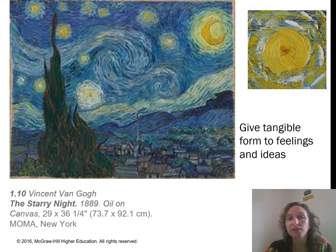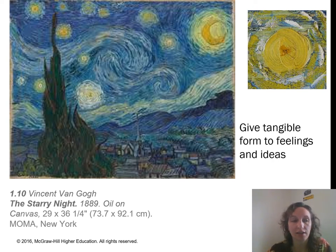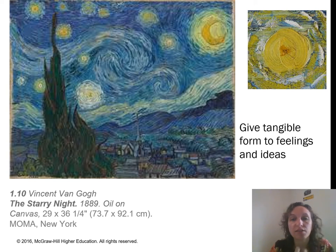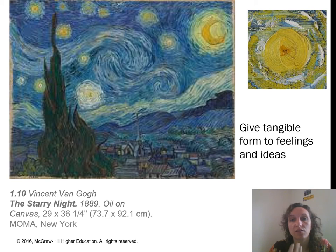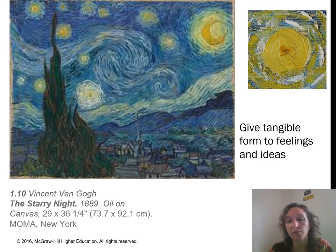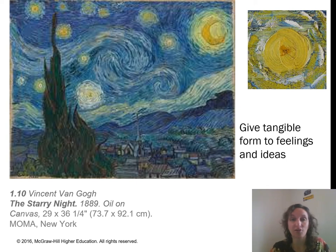The next thing that artists often do is give tangible form to feelings and ideas. Feelings and ideas are not physical things, and sometimes it's difficult to come up with the right words to express them. One of the best artists to do this is Vincent van Gogh. This is his work Starry Night, which you've probably seen before — there may or may not be a test question about this work, but you've likely seen it even if this is your first art class.